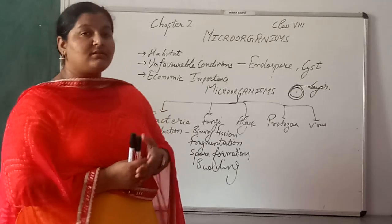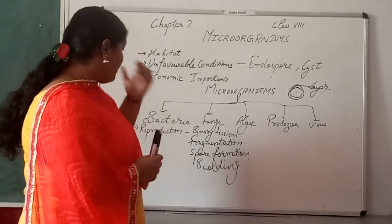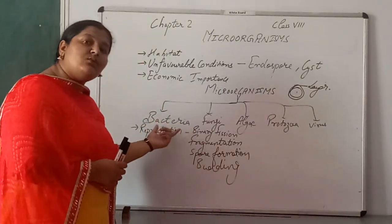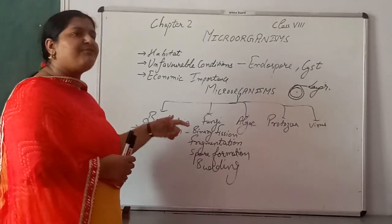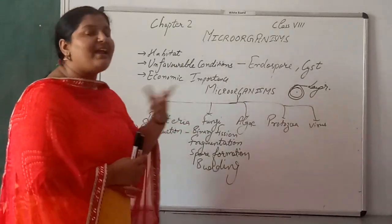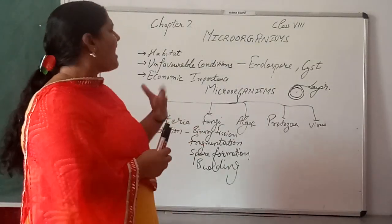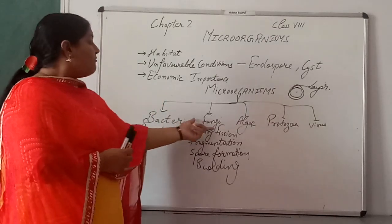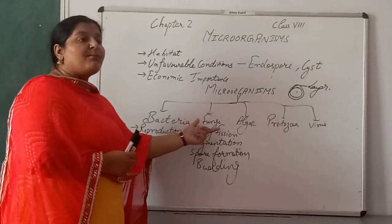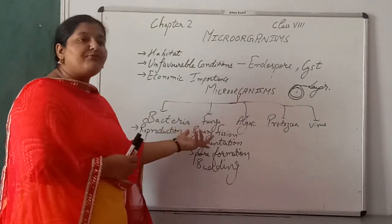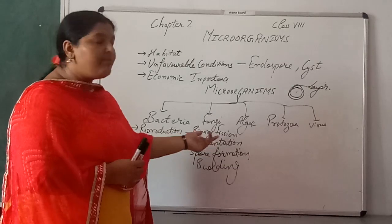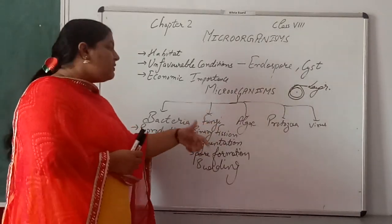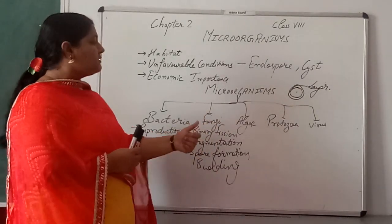Bacteria can be unicellular or multicellular organisms and are found in a wide range of habitats — soil, air, food, and everywhere. Fungi have a different mode of nutrition; they can be filamentous and reproduce by various methods. Algae are just like green plants — filamentous or branched — and follow autotrophic nutrition to prepare their own food.